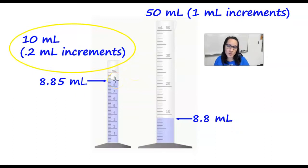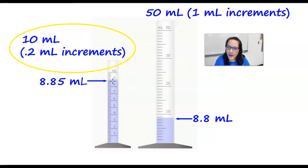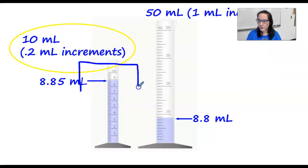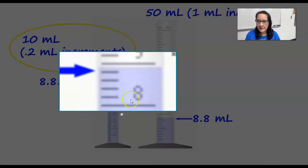If we were to read the volume using the 10-milliliter graduated cylinder, it would read 8, 8.2, 8.4, 8.6, 8.8, and then I can estimate between the lines — about 8.85. So that gives us 8.85 milliliters, and we're accurate to the hundredths place. Zooming in, you can see more easily: 8, 8.2, 8.4, 8.6, 8.8, and then estimating between the lines, about 8.85.